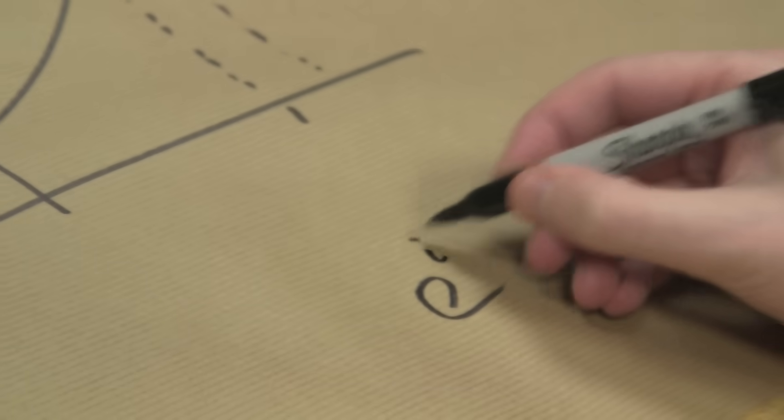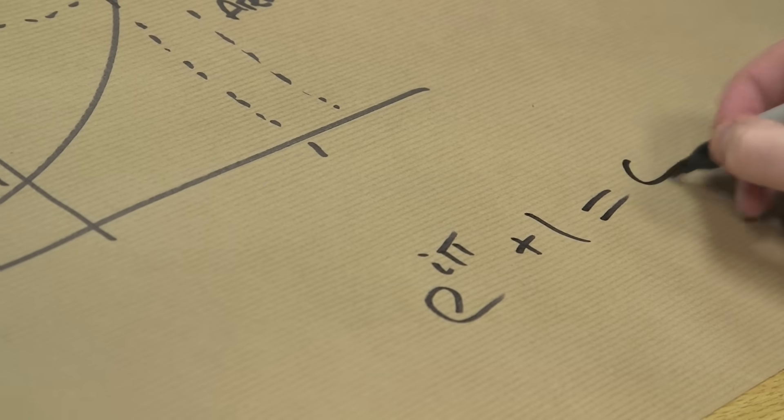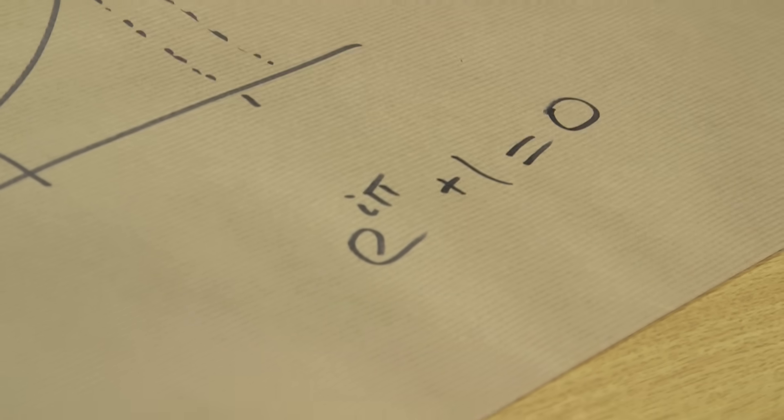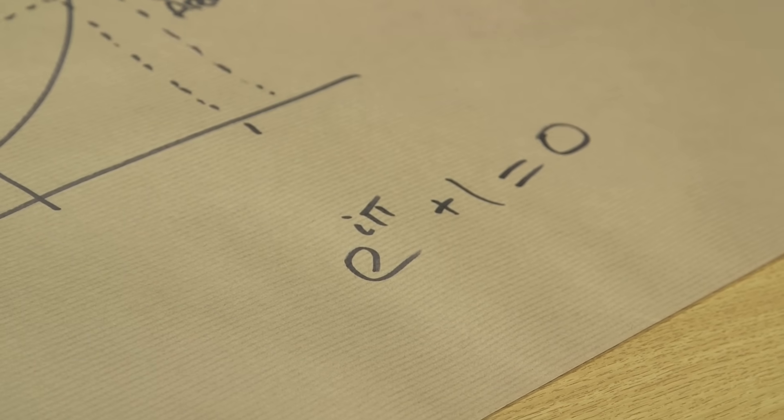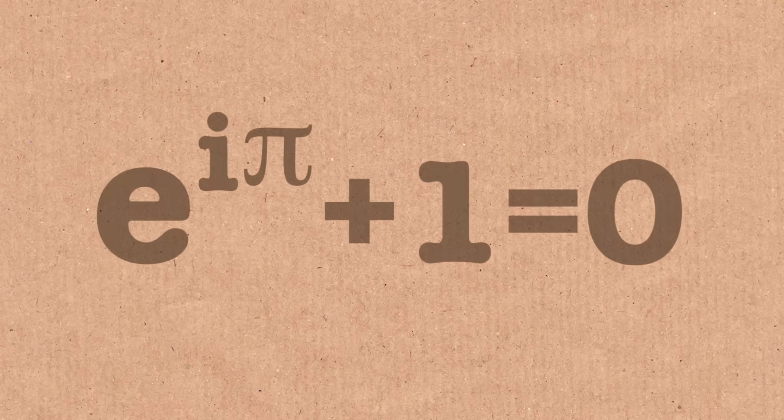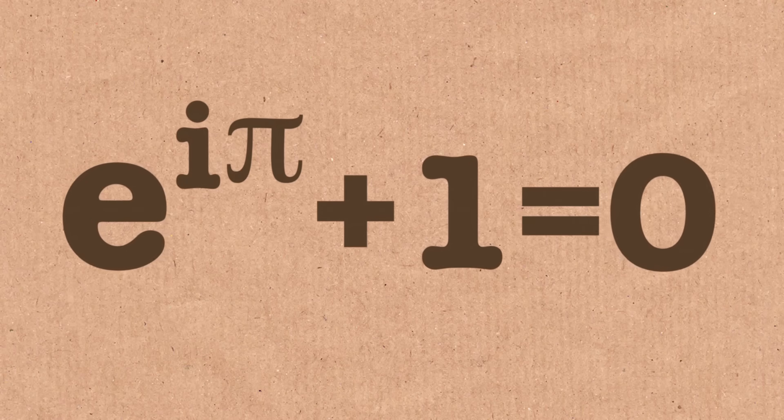E is also famous for bringing together all the famous mathematical constants with Euler's formula: E to the i pi plus 1 equals 0. There we have all the big mathematical constants in one formula — we've got E, we've got i, the square root of minus 1, and we've got pi, plus 1 and 0 — all brought together in one formula, which is often voted as the most beautiful formula in mathematics.